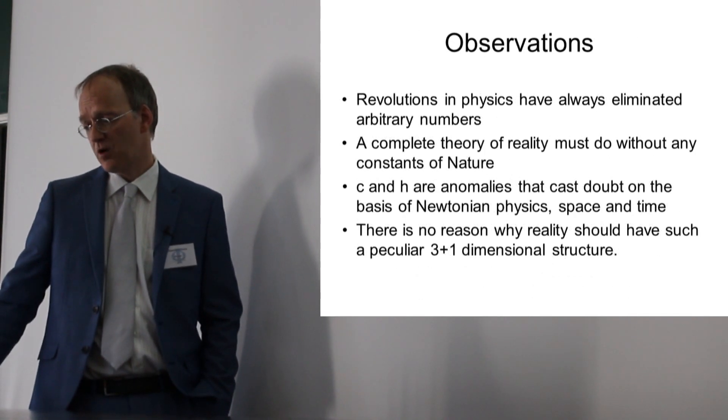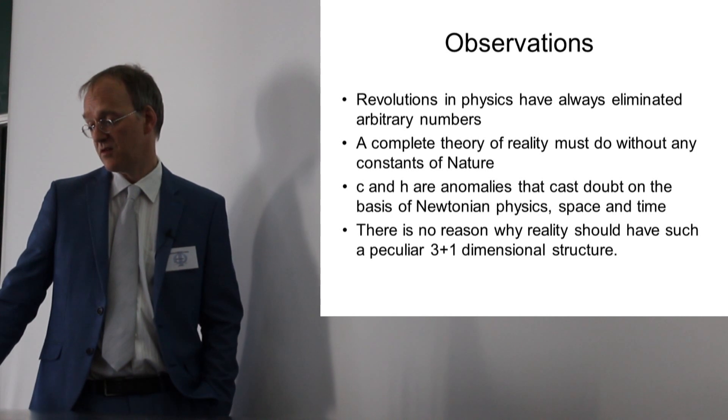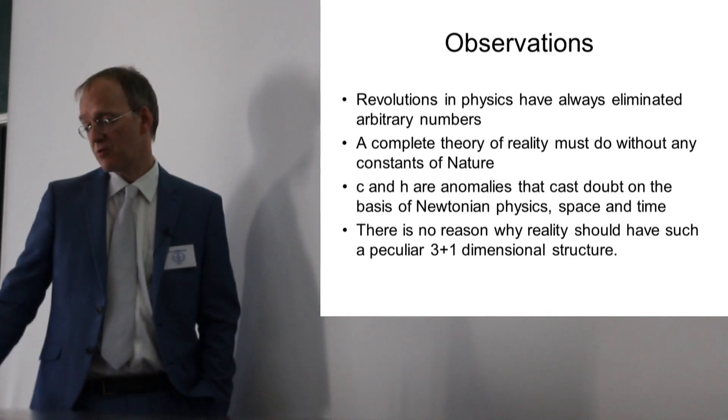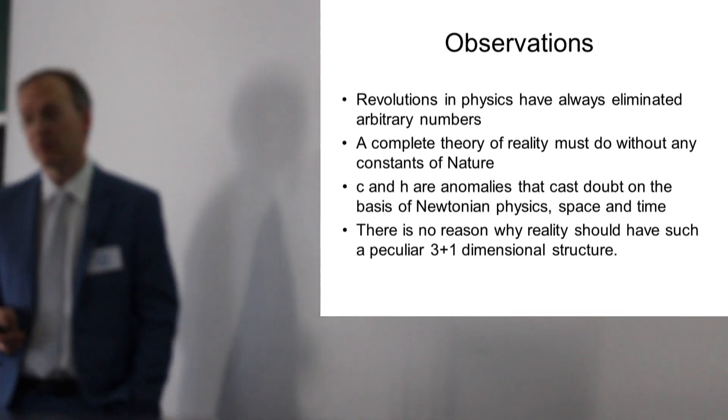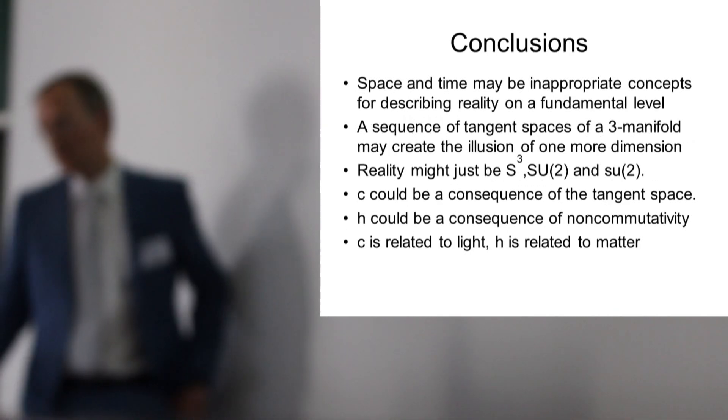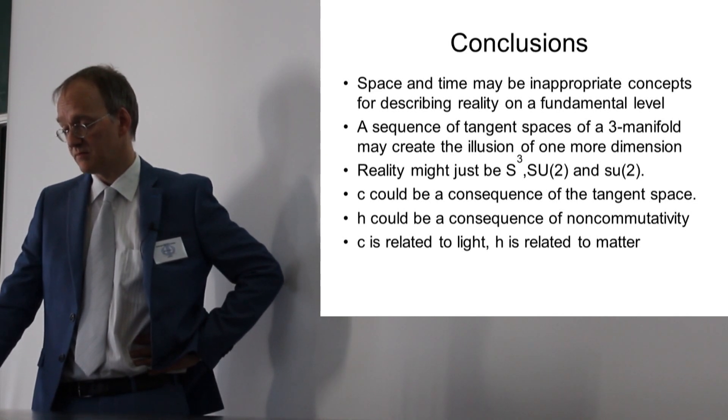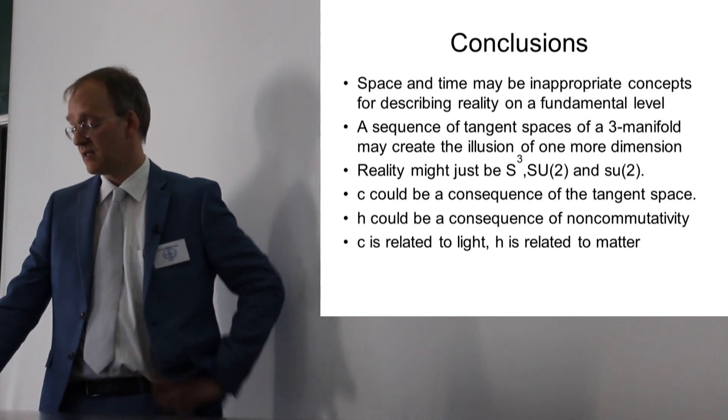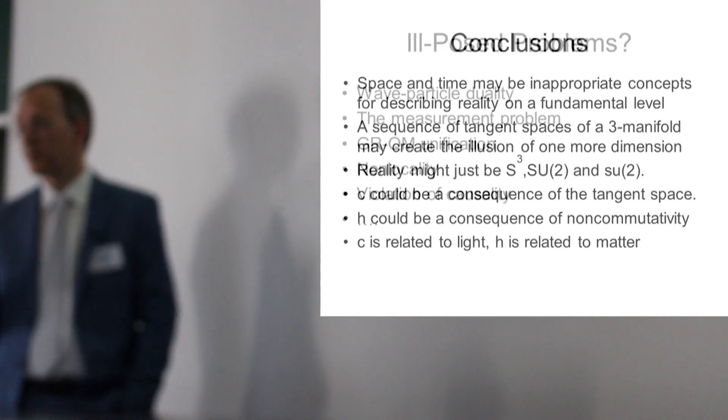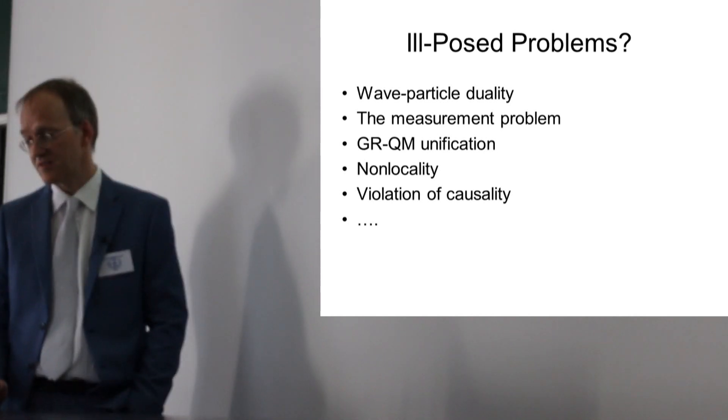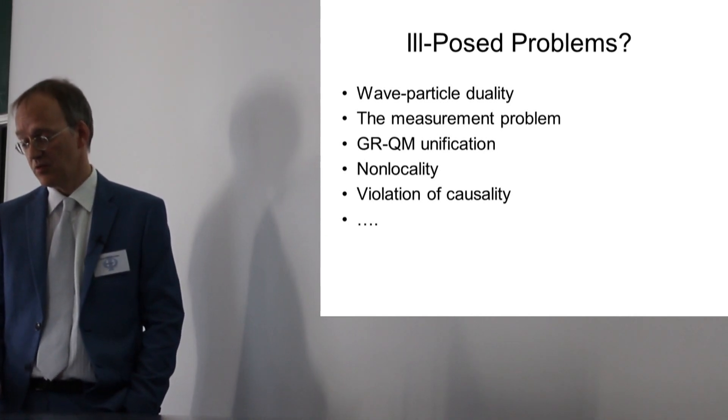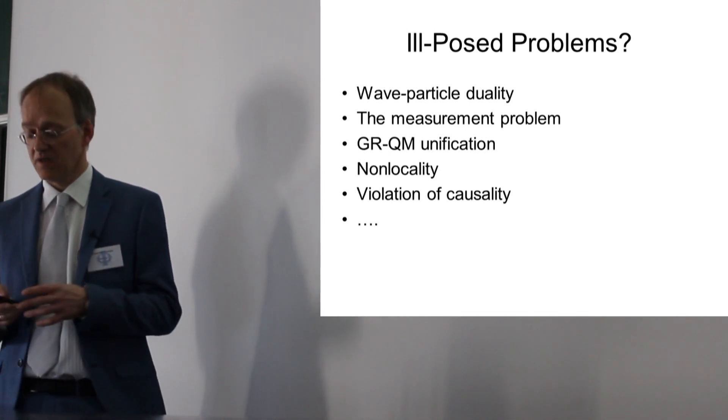To conclude, revolutions in physics have always eliminated arbitrary numbers. A complete theory of reality must do without any so-called constants of nature. C and H are anomalies that cast doubt on the basis of Newtonian physics: space and time. There is no reason why reality should have such a peculiar three plus one dimensional structure. Space and time may be inappropriate concepts for describing reality at a fundamental level. A sequence of tangent spaces may create the illusion of one more dimension. Reality might just be S3. C is related to light and H would be related to matter. A lot of problems would turn out to be ill-posed questions, like wave-particle duality. The unification of quantum mechanics and relativity could be an ill-posed problem.